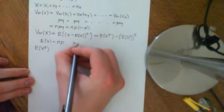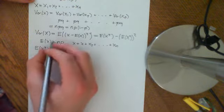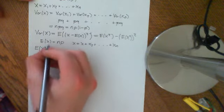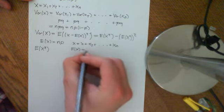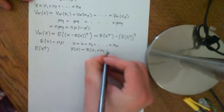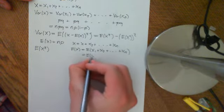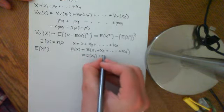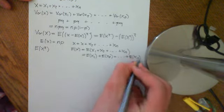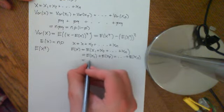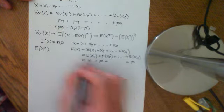We know that x is equal to x1 plus x2, all the way up to plus xn. And we know some very nice properties about expectation values. This is how we found the expected value of x for our binomial distribution — we applied linearity of the expected value, which we proved in an earlier video. Each xi has expected value p, so we overall end up with np.